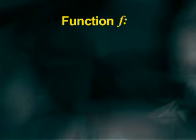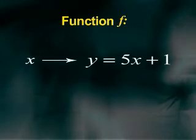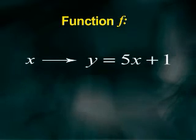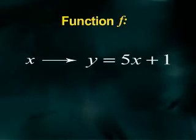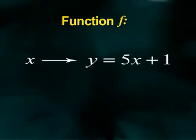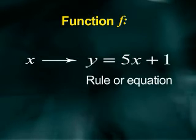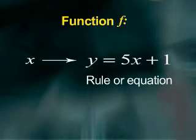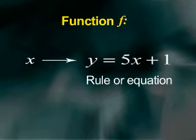Next, some vocabulary and notation. Suppose the function f assigned each domain value x to the range value y equals 5x plus 1. y equals 5x plus 1 is called the function rule or equation. It defines the relationship between x and y.